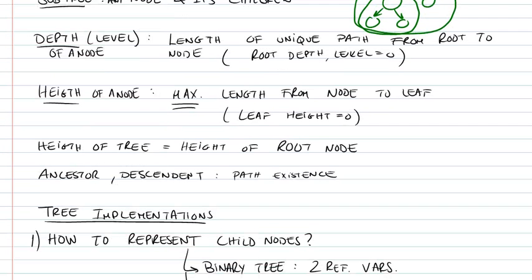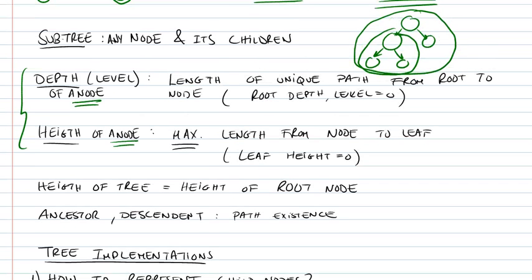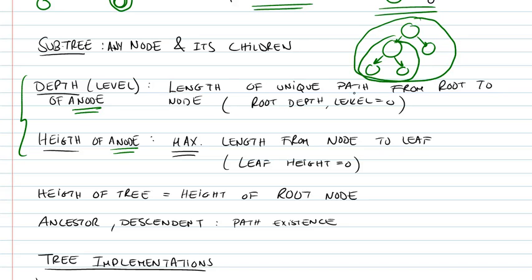The depth or level of a node. So these are two definitions relating to a node. This is like a property of a node. When you look at a node, you can define its depth or level and height. The depth would be the length of a unique path from the root to the node. So when we look at this particular node, we would have to find the unique path going from the root to that node and just get its length.